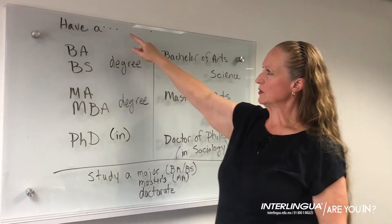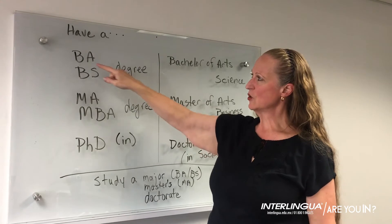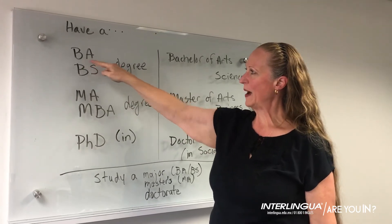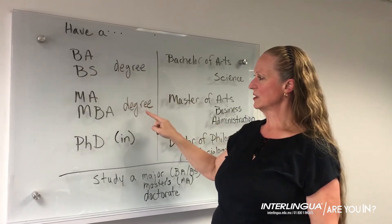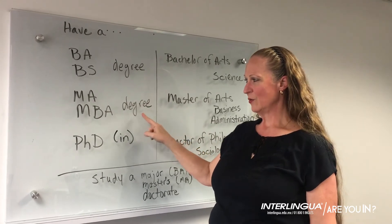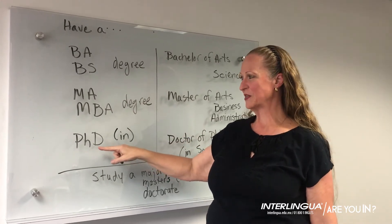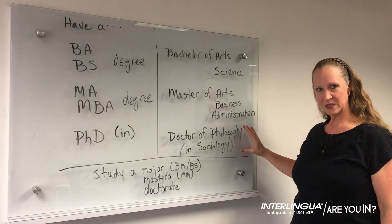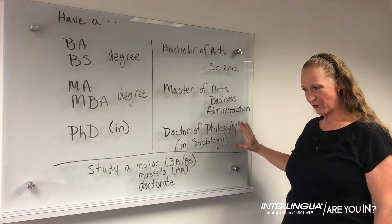Notice we say you have a degree, so you have a BA or you have a Bachelor's degree. You have a Master's degree. We don't usually say you have a PhD degree — you say you have a PhD in, and then you say specifically what it is.